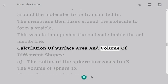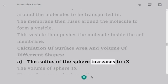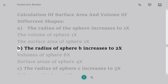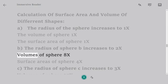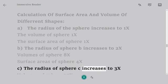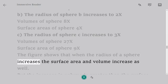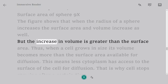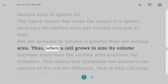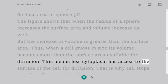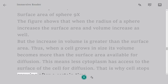Calculation of surface area and volume of different shapes: The radius of sphere increases: 1x volume, 1x surface area. Radius increases to 2x: volume 8x, surface area 4x. Radius increases to 3x: volume 27x, surface area 9x. The figure shows that when the radius of a sphere increases, the surface area and volume increase as well. But the increase in volume is greater than the surface area. Thus, when a cell grows in size its volume becomes more than the surface area available for diffusion. This means less cytoplasm has access to the surface of the cell for diffusion. That is why cell stops growing after a certain time.